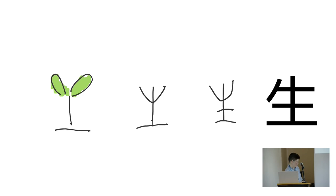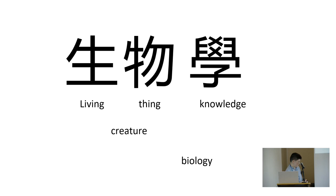Another Chinese character: there's soil here and a plant with green leaves growing up, which simplifies to two branches and another branch. It means 'to live' or 'living.' I didn't tell you the pronunciation because it doesn't really matter. What you have to do is memorize the shape, the form, and the logic behind it.